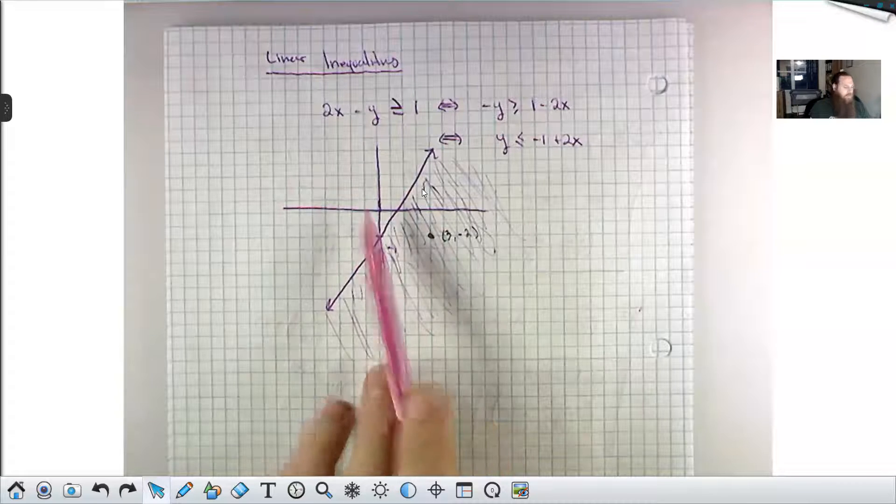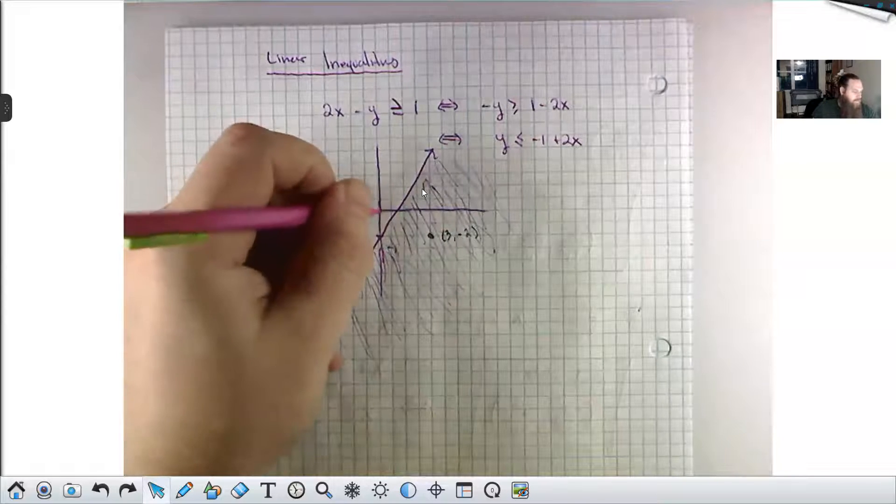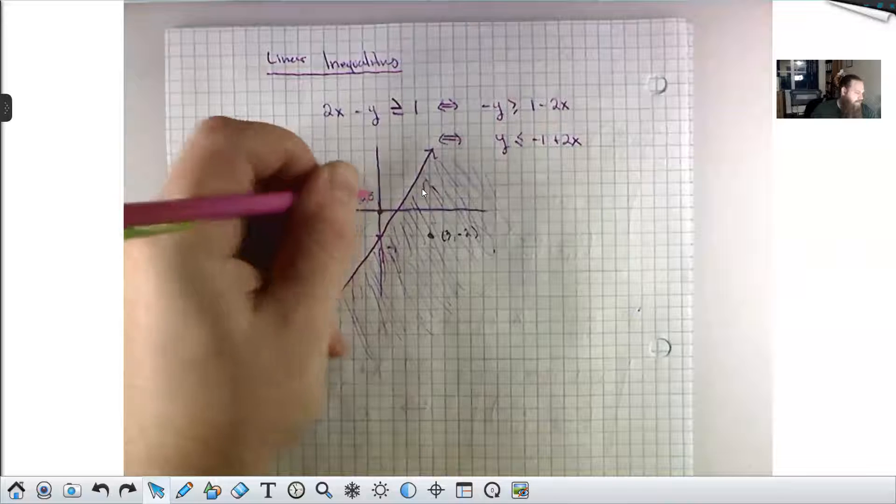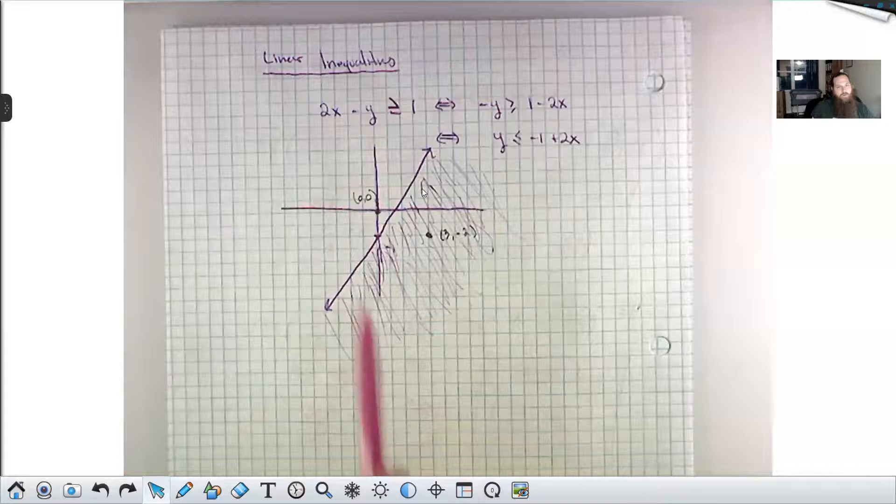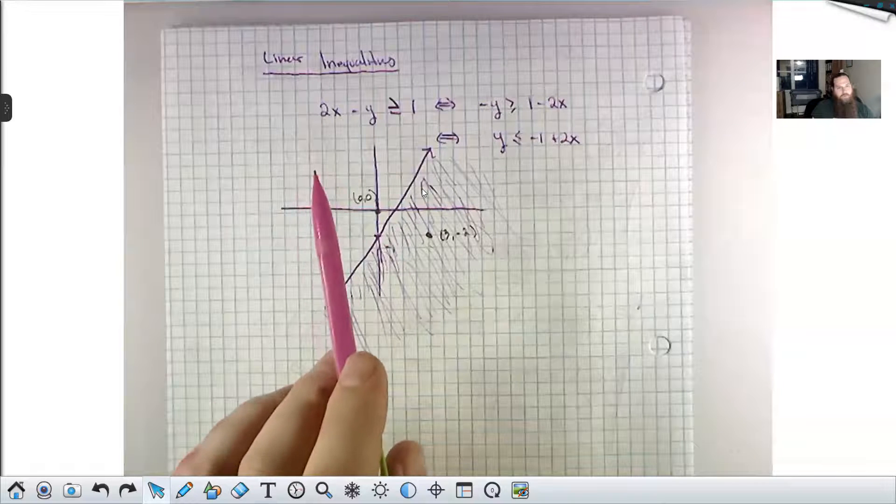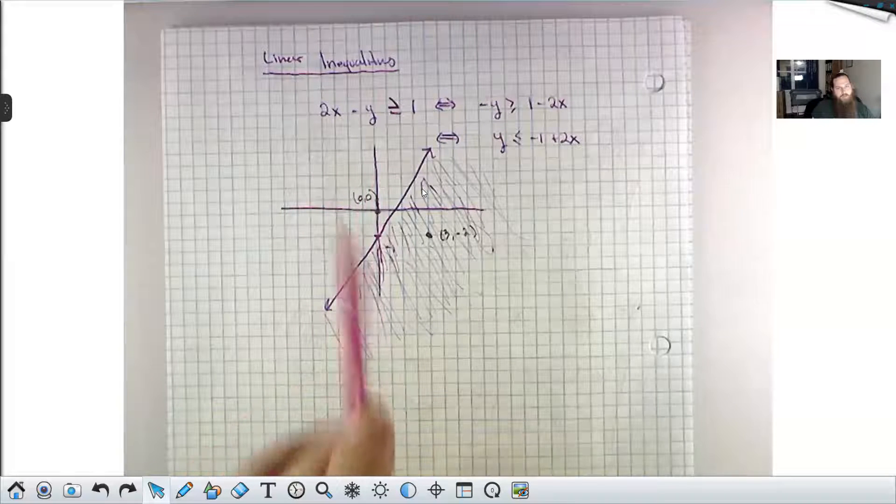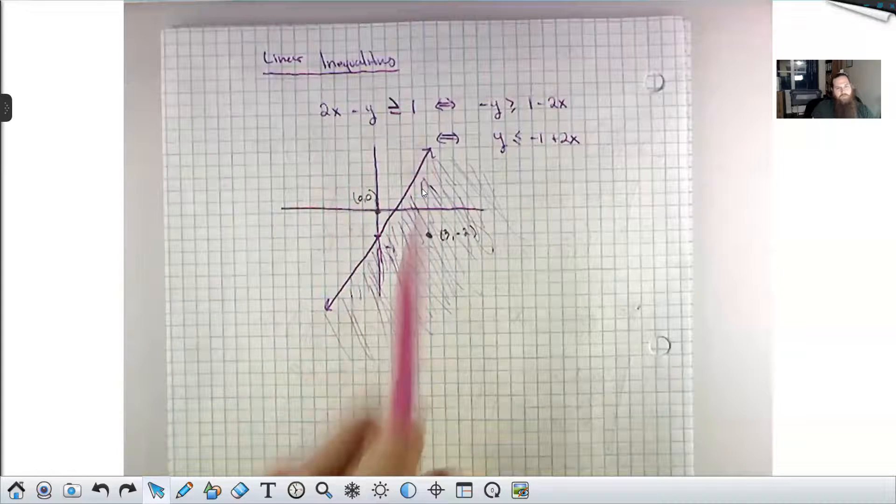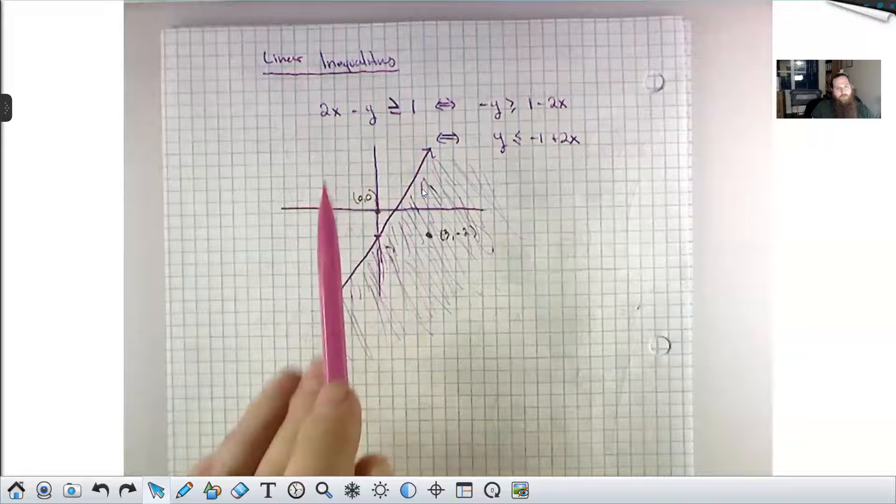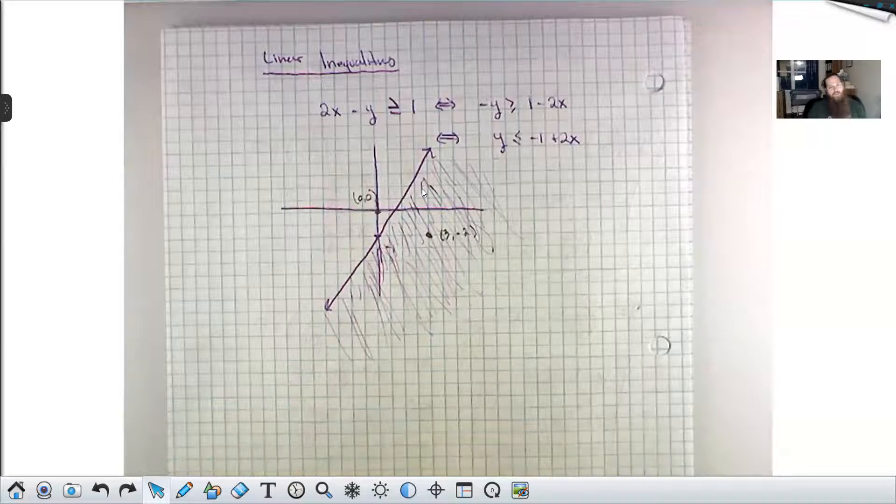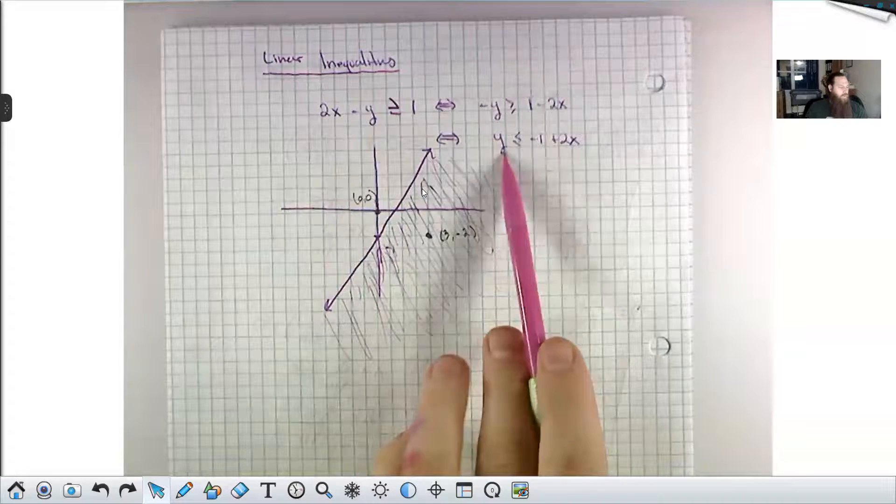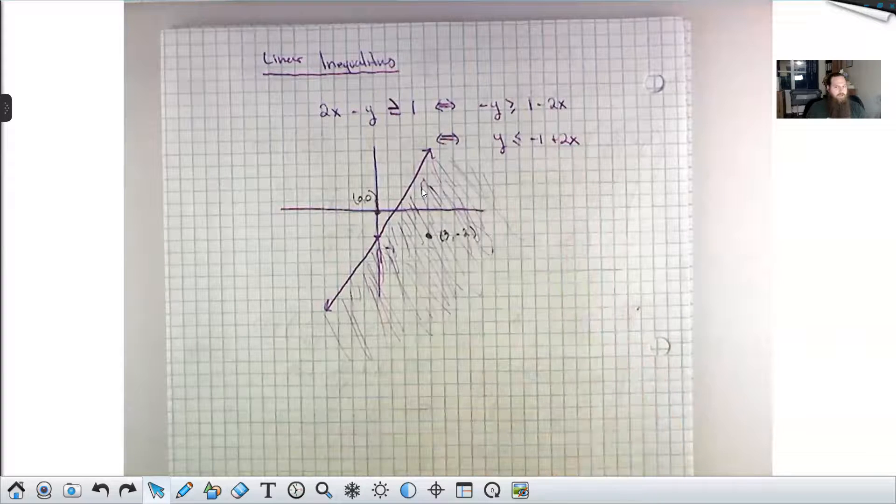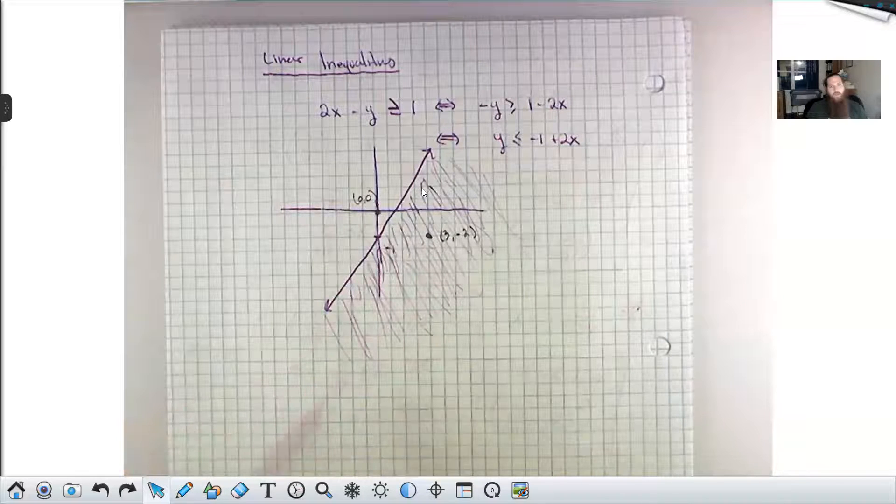If you were to test something over here like 0, 0, plug that in, you get 2 times 0 minus 0 is greater than or equal to 1. Well, 2 times 0 is 0, 0 minus 0 is 0, and 0 is greater than or equal to 1. That's a false statement. So that's why this point is not in that shaded solution space. But the more intuitive way to think about it is if this is y is less than some line, then you're talking about the points that are below that line.